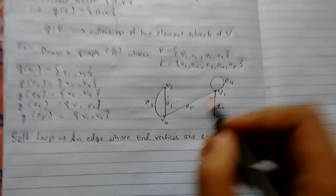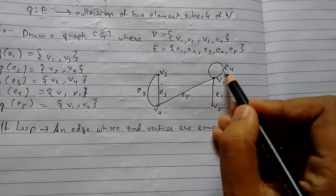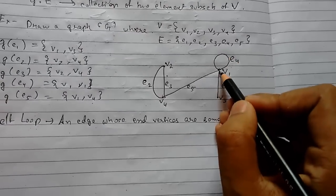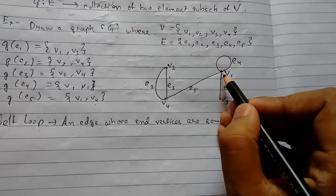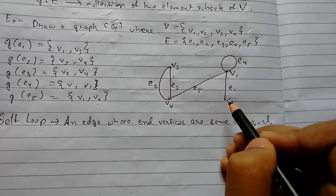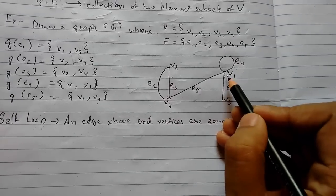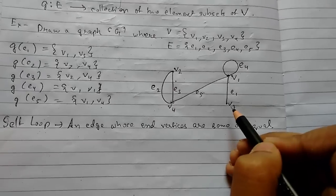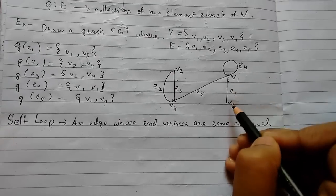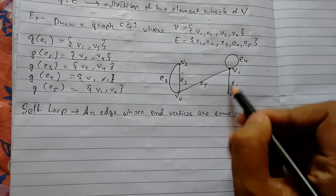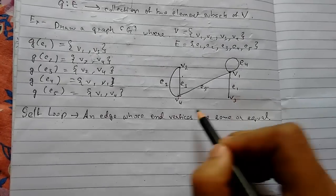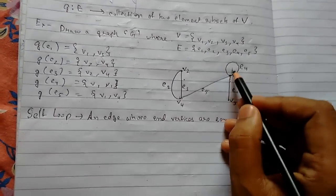Here we can see that for this edge e4, the initial and final vertex are the same. But for edge e1, the initial vertex is v1 and the final vertex is v3. These are the end vertices of an edge, which are not the same, so it is not a self loop. But for edge e4, it is a self loop.